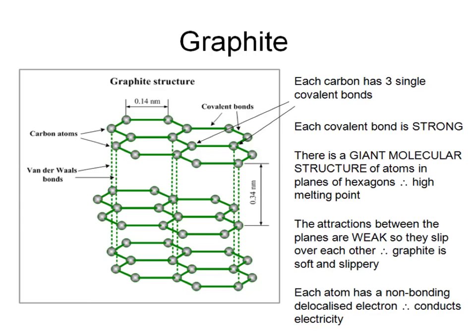Although the bonds within the hexagonal layers are very strong, giving a high melting point, there are only weak attractions between one layer and the next. That means these layers can easily slip or slide over each other, which means graphite is soft and slippery, and useful as a dry lubricant.